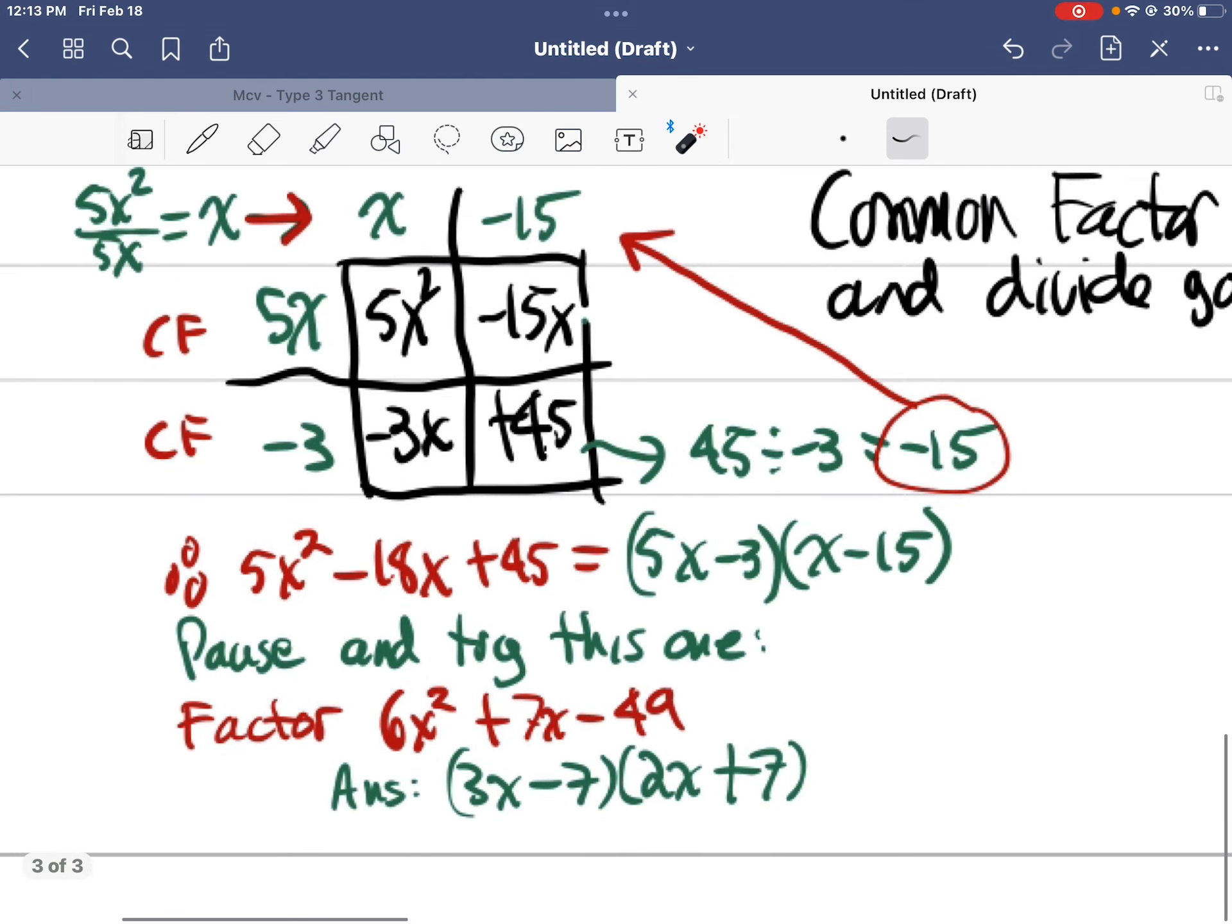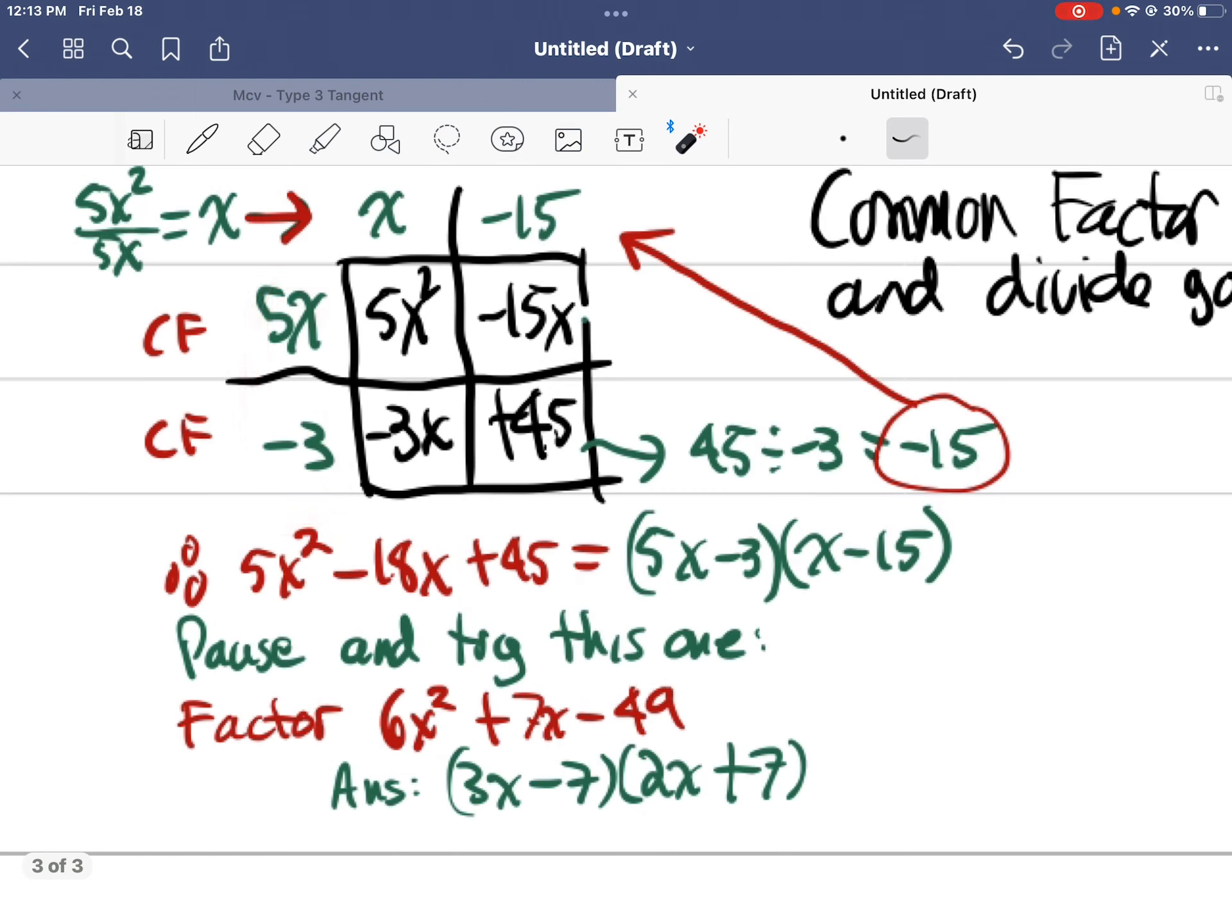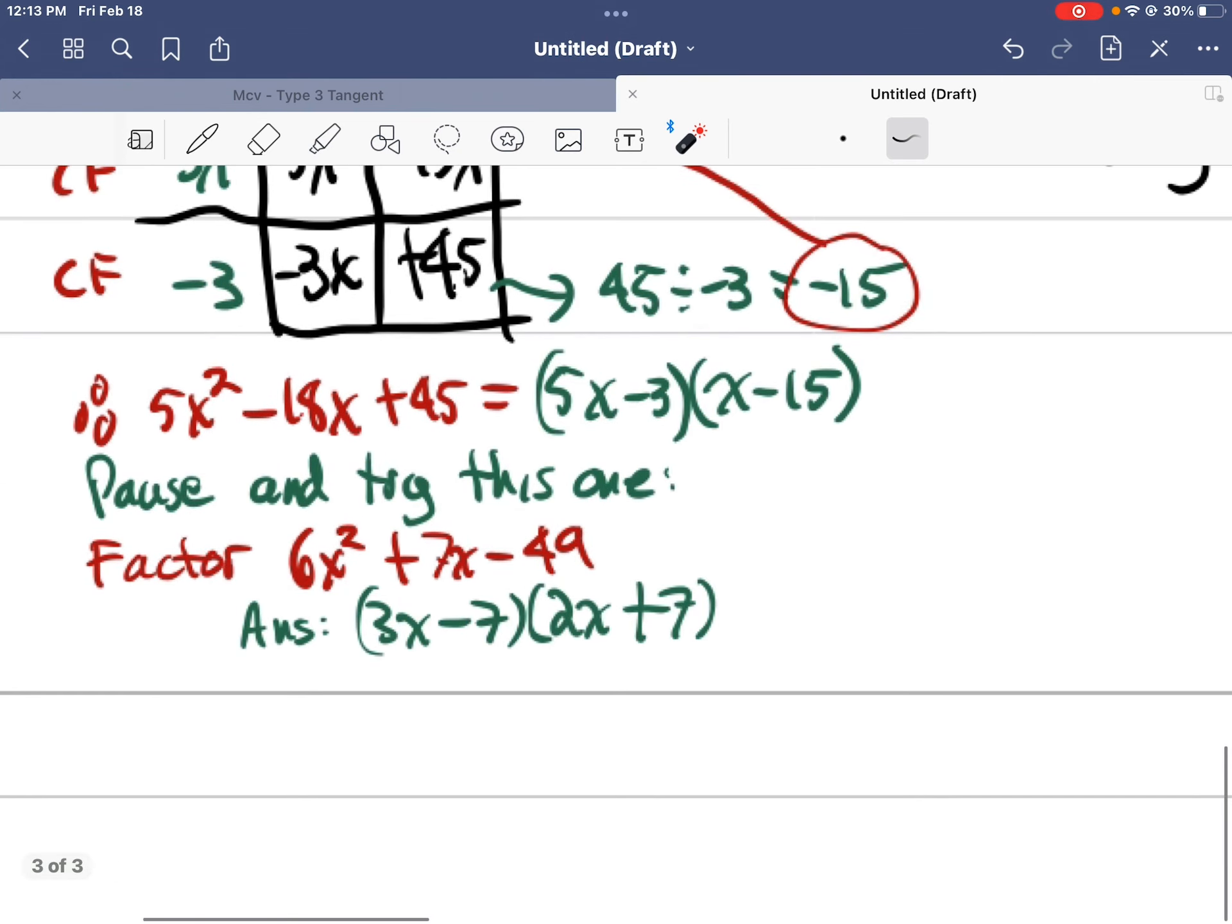Okay. So now I've got my answer. Five X by, so it's a rectangle, right? It's area. So it's length multiplied by width. Five X minus three multiplied by X minus 15. And I'm done.